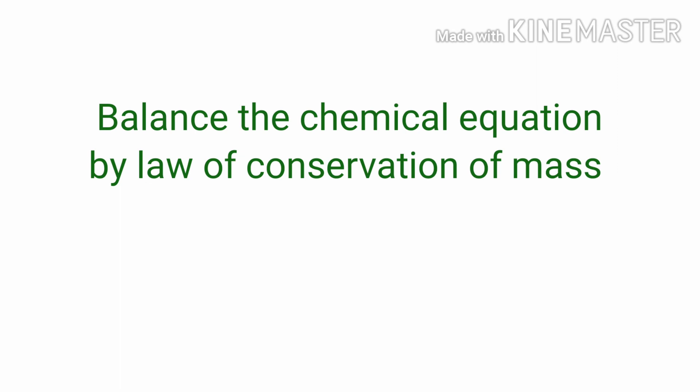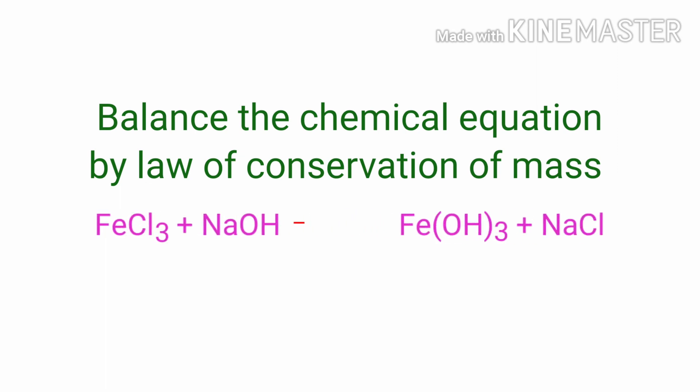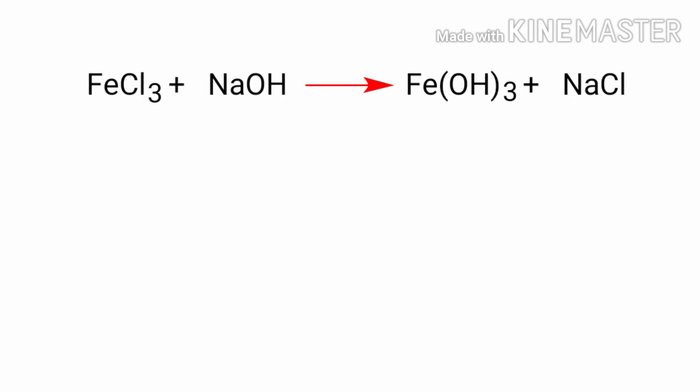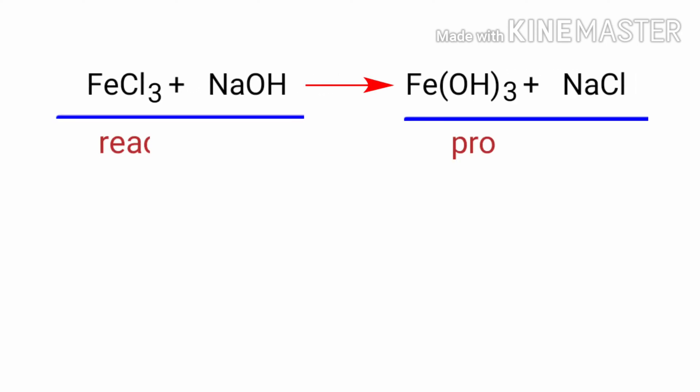Balancing a Chemical Equation by the Law of Conservation of Mass. Ferric Chloride plus Sodium Hydroxide gives us Iron-3 Hydroxide plus Sodium Chloride. In this equation, the reactants are Ferric Chloride and Sodium Hydroxide, and the products are Iron-3 Hydroxide and Sodium Chloride.